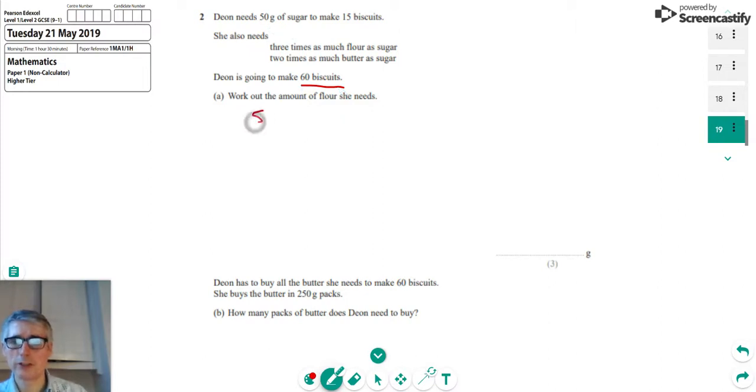For 15 biscuits, what we could do is say well she's making 60 and that is times by 4. So the amount of sugar is going to go up in the same proportion.